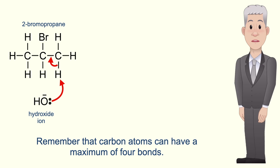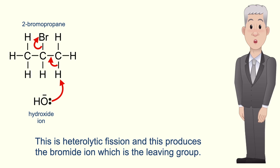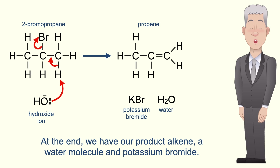Remember that carbon atoms can have a maximum of four bonds, so the electron pair between the carbon and bromine atom move on to the bromine. This is heterolytic fission and this produces the bromide ion, which is the leaving group. The bromide ion and potassium ion form potassium bromide. At the end we have our product alkene, a water molecule and potassium bromide.